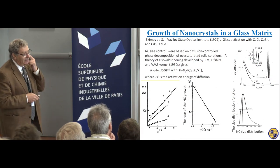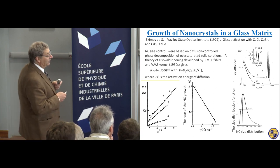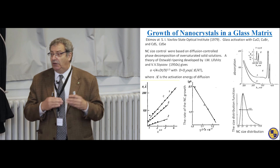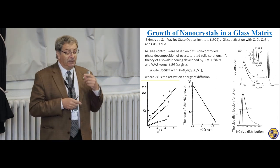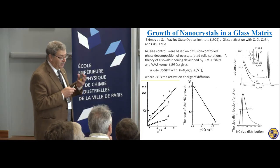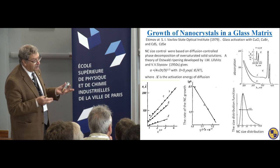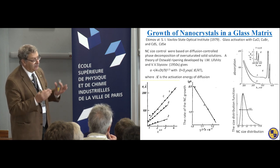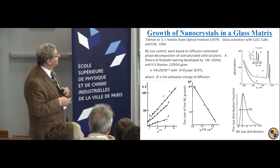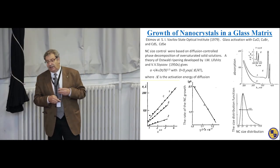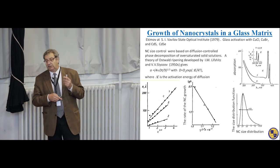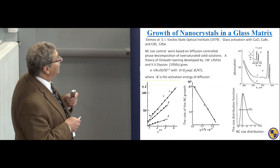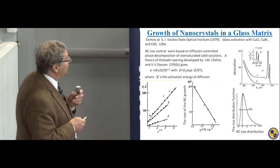In 1979, Alexei Ekimov moved to the Vavilov Optical Institute from Ioffe Institute. Vavilov Institute had this technology of short glass growth, and color formation was a fascinating problem. He decided to investigate this phenomenon. The initial idea was to study these colloids — their structure, composition, how they grow, how growth depends on temperature. In contrast to old recipes, he decided to activate these glasses by individual compounds: copper chloride, copper bromide, cadmium sulfide, cadmium selenide. The nanocrystal size was controlled based on diffusion-controlled phase decomposition of a supersaturated solid solution.